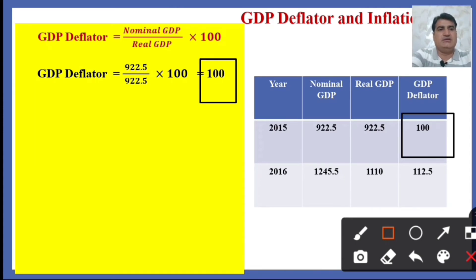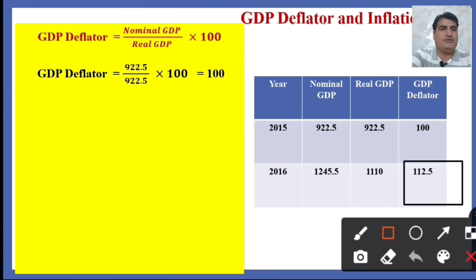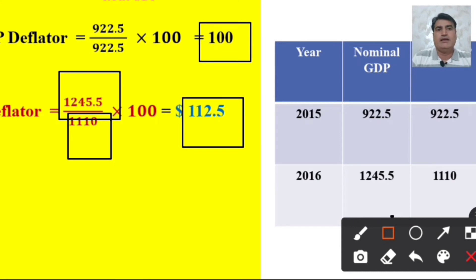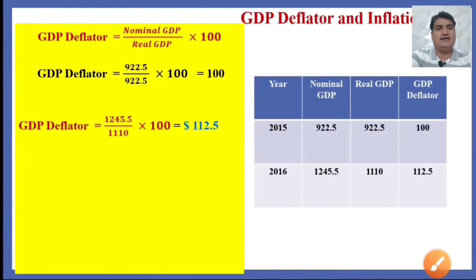We are calculating the GDP deflator for 2016, which comes out to 112.5. So the GDP deflator was 100 in 2015 and is 112.5 in 2016, meaning it has increased by 12.5 percent. This represents the rise in output value due to the rise in price.